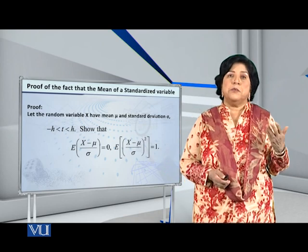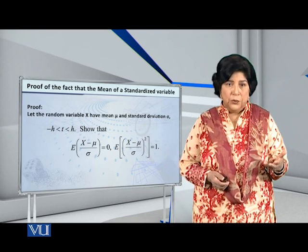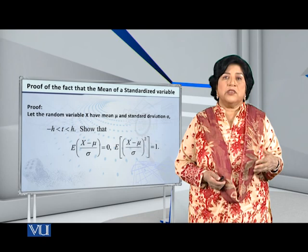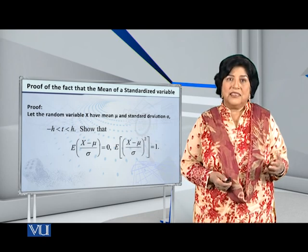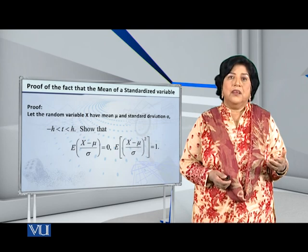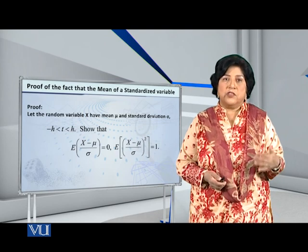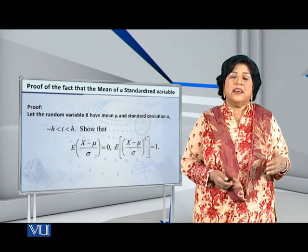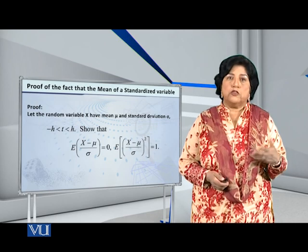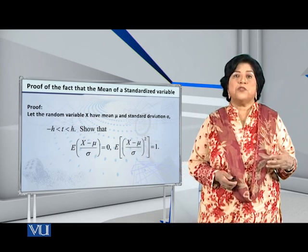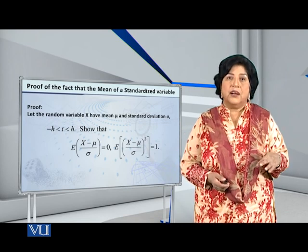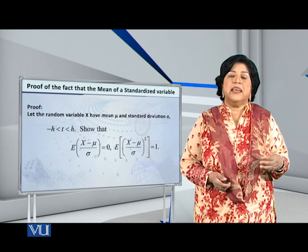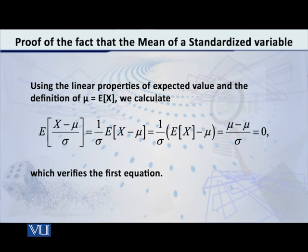Suppose we have the random variable x whose mean is mu and whose standard deviation is sigma. We want to show that the expected value of (x minus mu) over sigma is equal to 0, and also to show that the expected value of (x minus mu over sigma) whole square is equal to 1. Let us try to do it one by one.